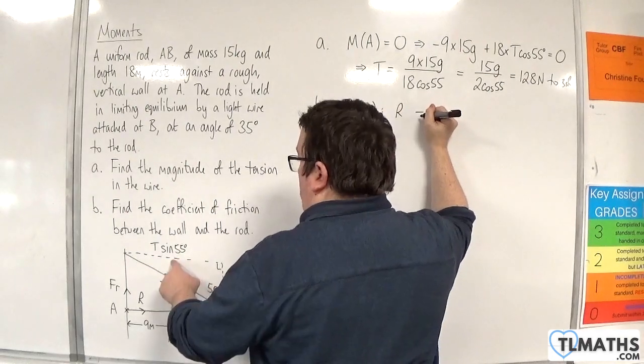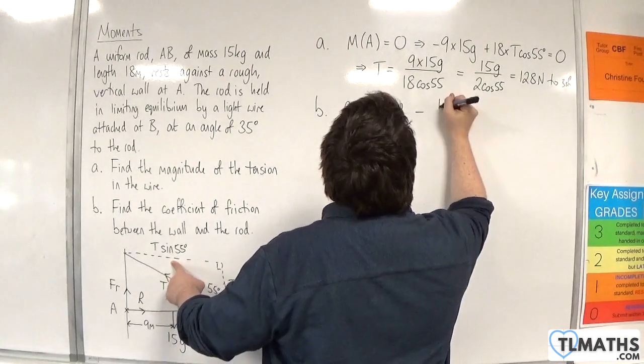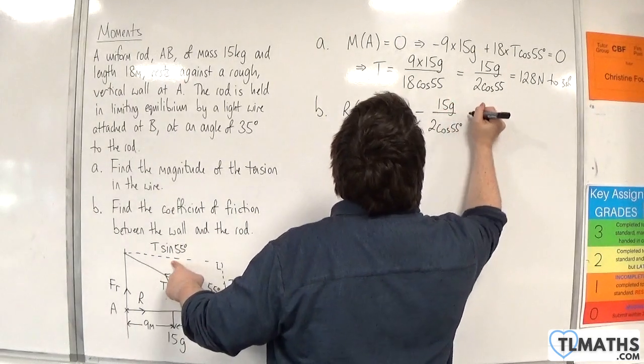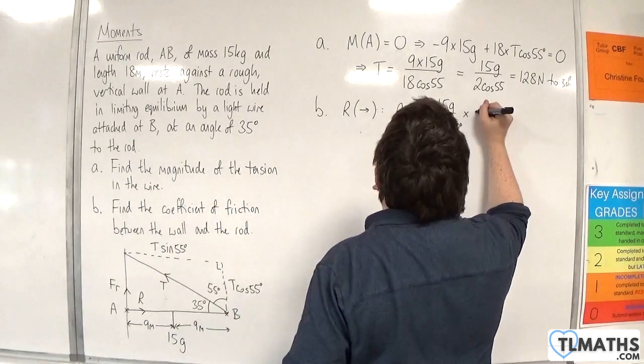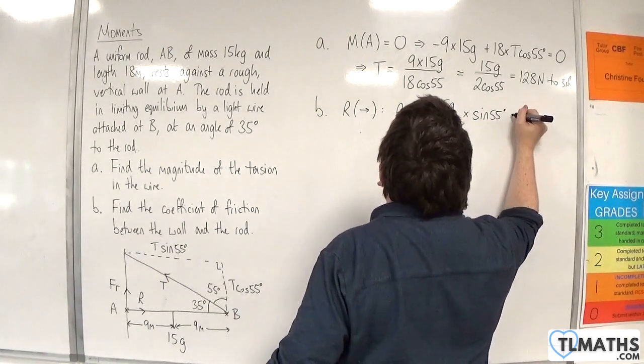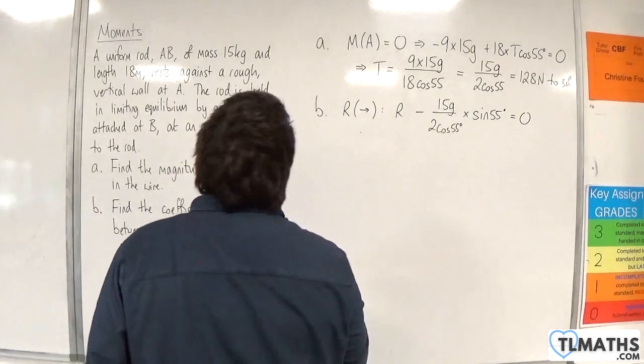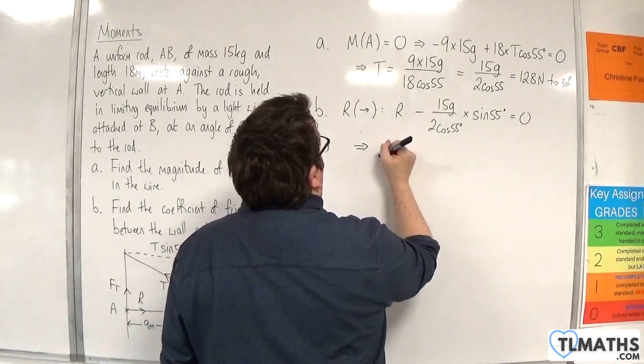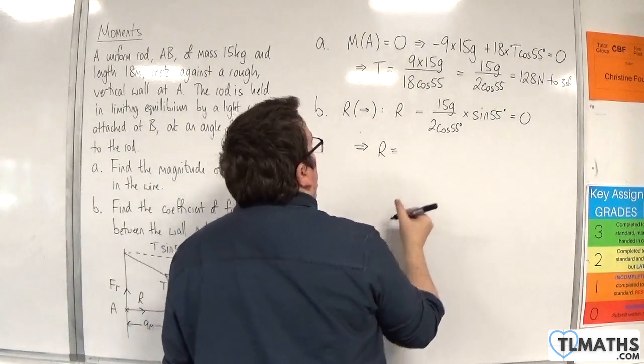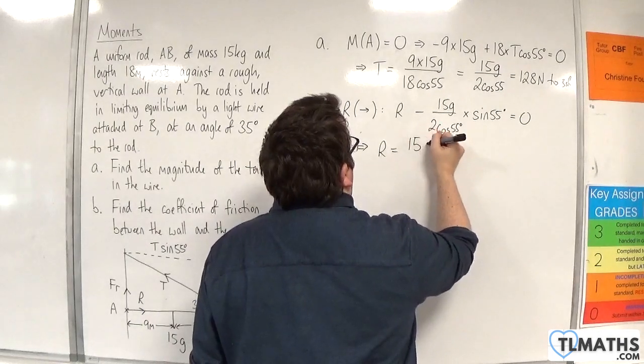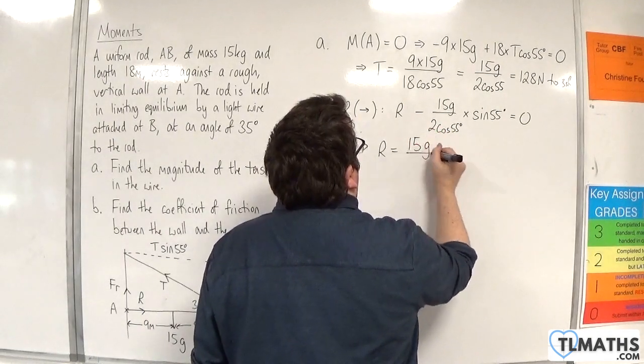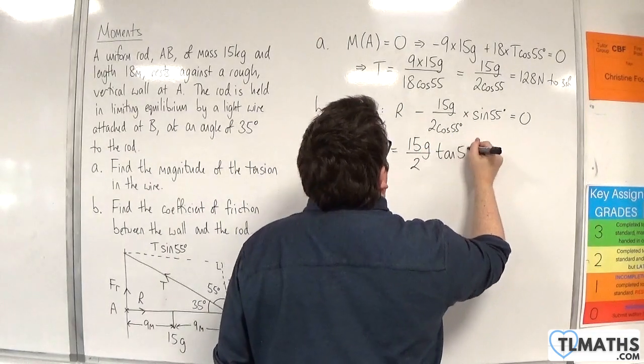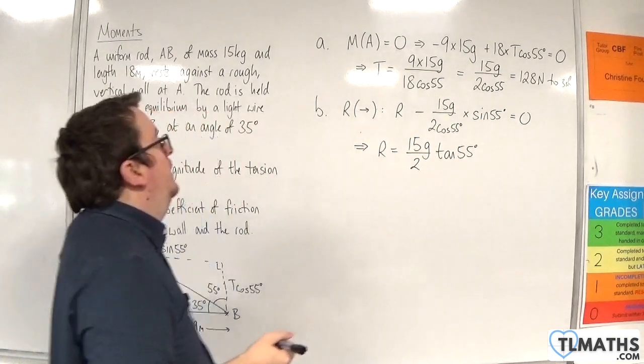Then take away T sine 55. So 15g over 2 cosine 55 times sine of 55 is equal to 0. So R would be equal to 15g over 2, and then I've got sine over cosine, so tan of 55 degrees. So that's R.